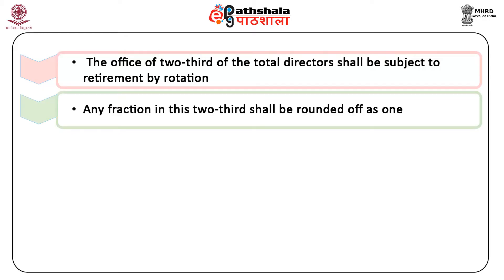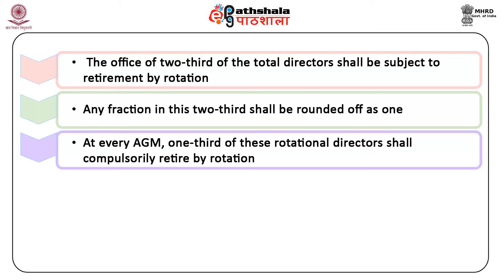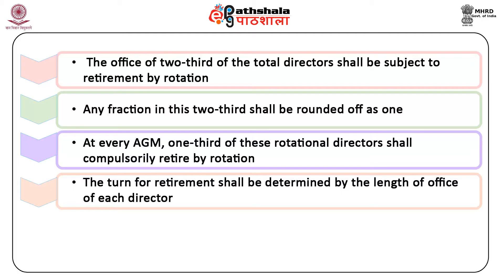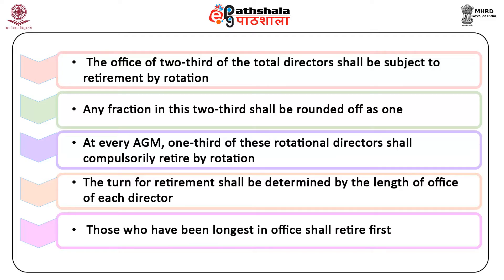Any fraction in this two-thirds shall be rounded off as one. At every AGM, one-third of these rotational directors shall compulsorily retire by rotation. The turn for retirement shall be determined by the length of office of each director. Those who have been longest in office shall retire first. As between persons who became directors on the same day, retirement may be decided by lots.